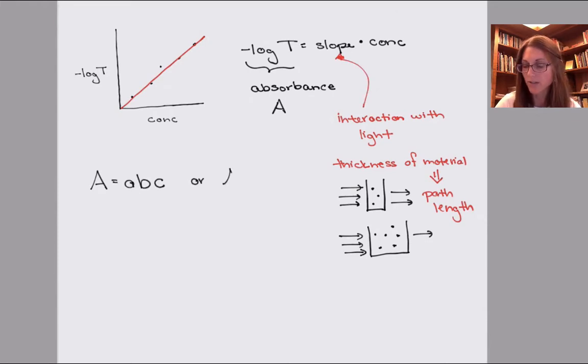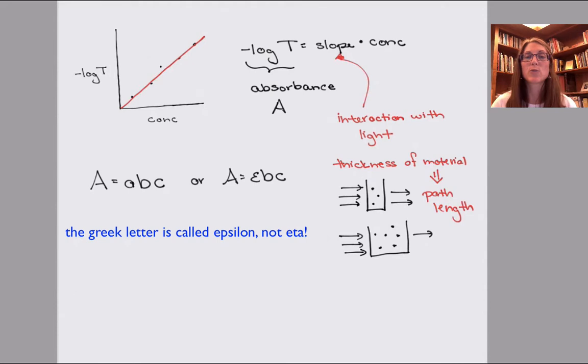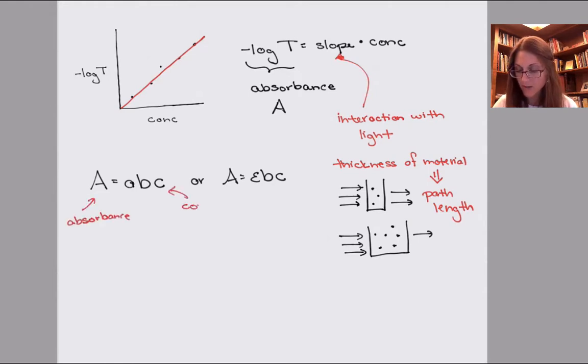Or you'll also see it written as A equals epsilon B C. So the only difference between these two is what symbol we're going to use to represent that interaction with the light. A, again, is our absorbance, C is the concentration.